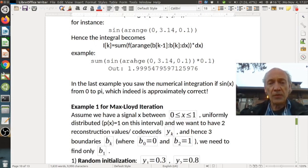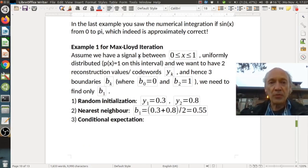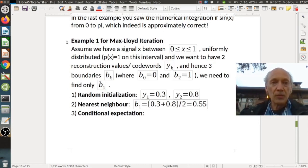For instance, here in our case, we integrate from 0 to pi with steps of 0.1, and this is the result. We get 2, almost 2. So 2 would be the correct answer, and here we can see we deviate a little bit, and that's our approximation error basically. This is the numerical integration of sine of x from 0 to pi, which we see is approximately correct. So here is now an example for the Max-Lloyd integration.